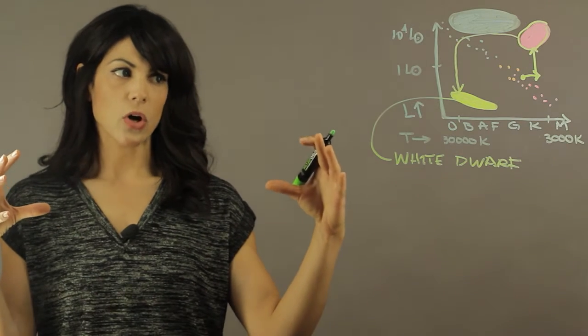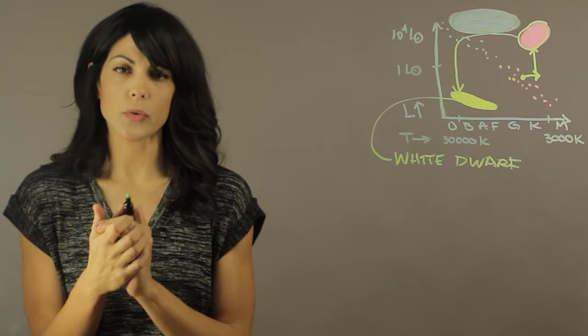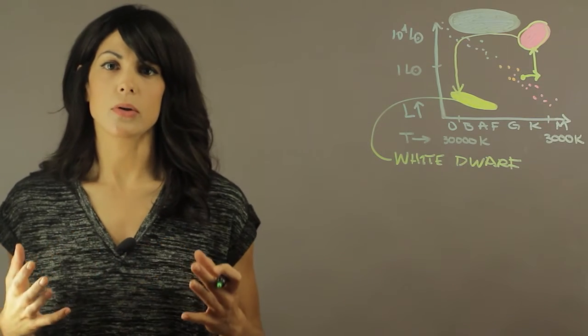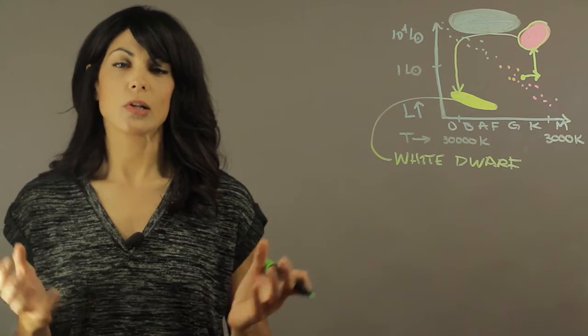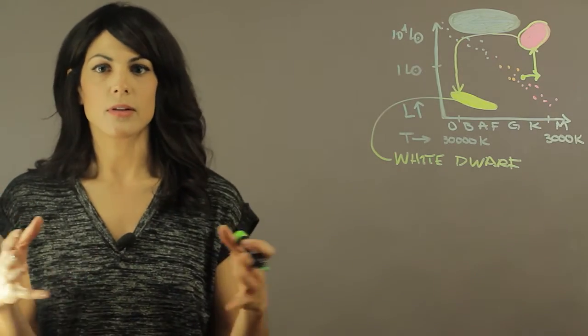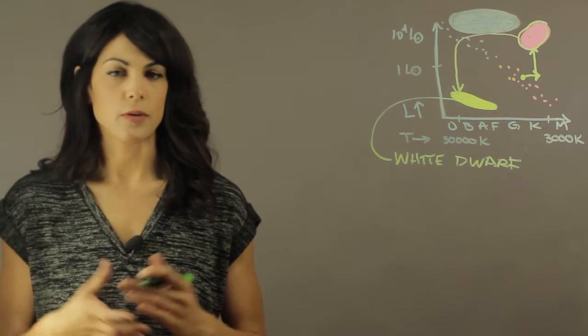Once the star has contracted into a white dwarf size, the cooling process can take up to a billion years. It's just eventually going to lose all of its heat. So it starts at 30,000, and eight billion years later it drops to a couple thousand degrees.